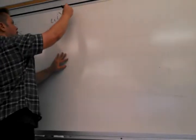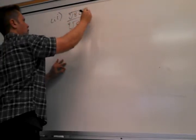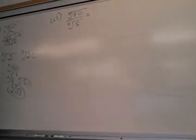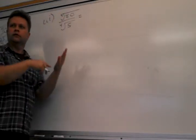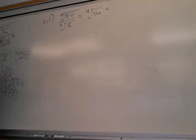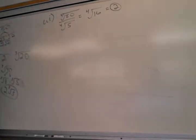Now here's one with a fourth root. Say you have the fourth root of 80 divided by the fourth root of 5. Since both are under the same fourth root, you can just divide: 80 divided by 5 is 16. And the fourth root of 16 is 2, because it takes four 2s to multiply to be 16. Don't confuse this with a square root — it's not 4.